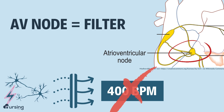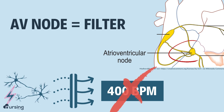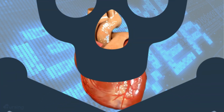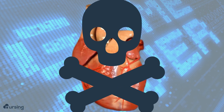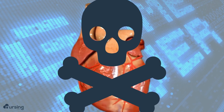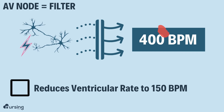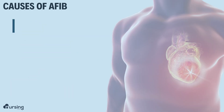We don't want to allow 400 atrial beats per minute to reach the ventricles, because if that were to occur, then we're basically looking at 400 beats per minute ventricularly. That's not compatible with life. So this AV node acts as a filter, not allowing all 400 beats per minute to go through. It actually ends up reducing this ventricular rate to about 150 beats per minute.